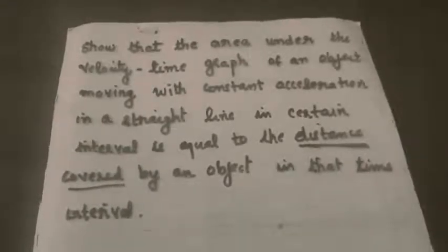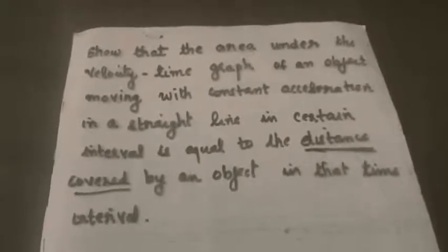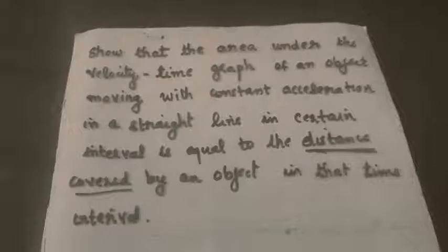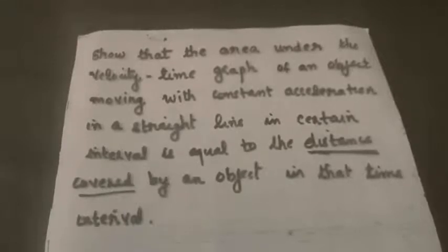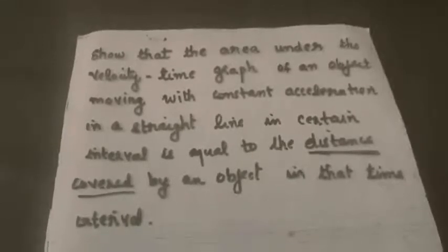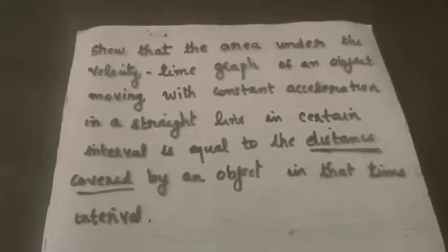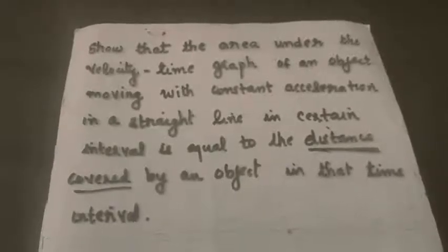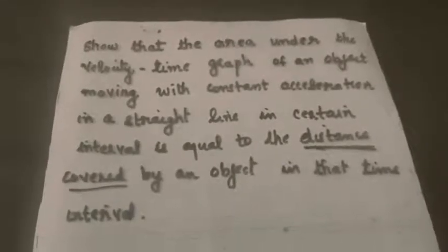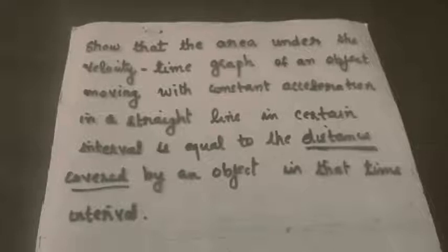Uniformly accelerated motion means velocity changes by equal amounts in equal intervals of time. That is what happens when a body moves with uniform acceleration. The velocity-time graph for uniformly accelerated motion is a straight line inclined to the time axis.